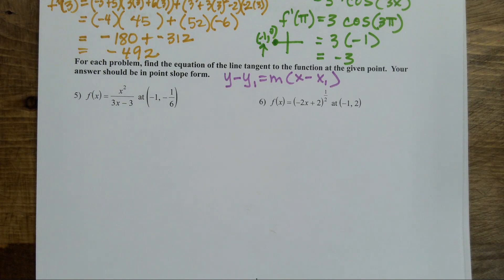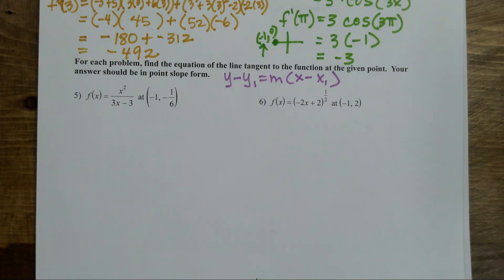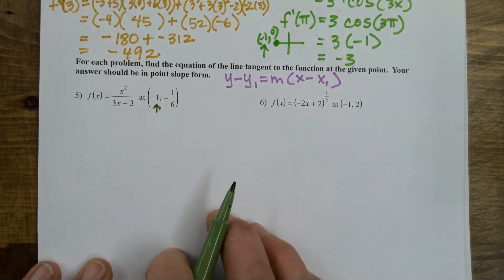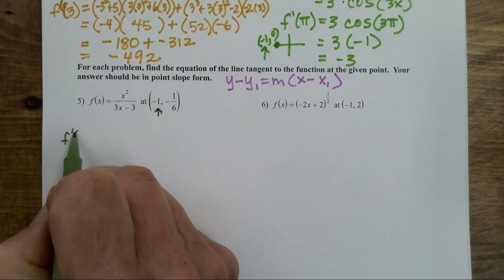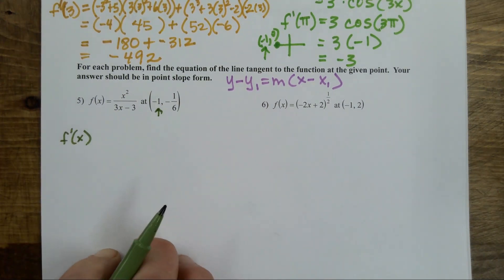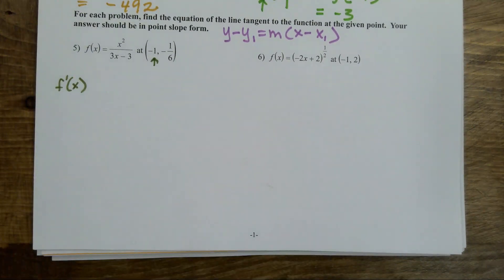I already have the point. The only thing I'm missing is the slope. When I talk about slope, I'm thinking derivative. So I want to find the derivative of this function at x equals negative one.